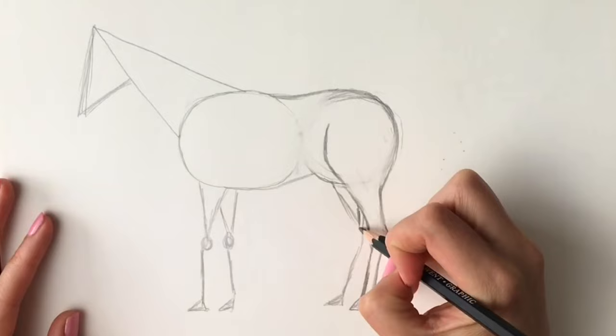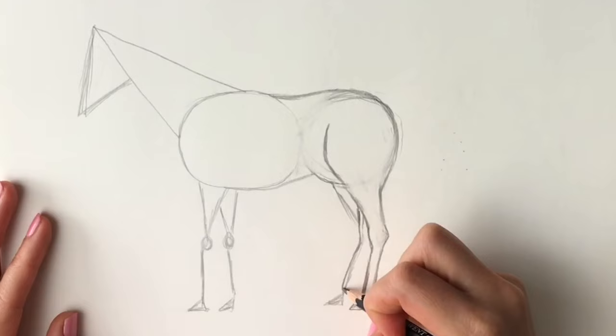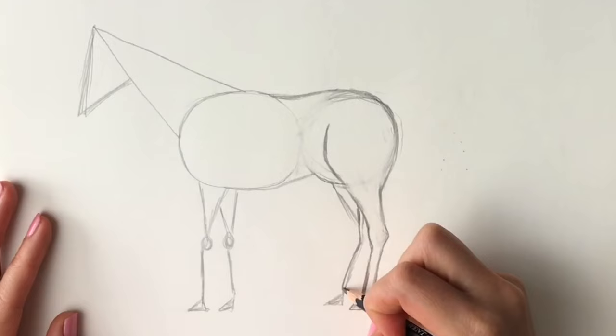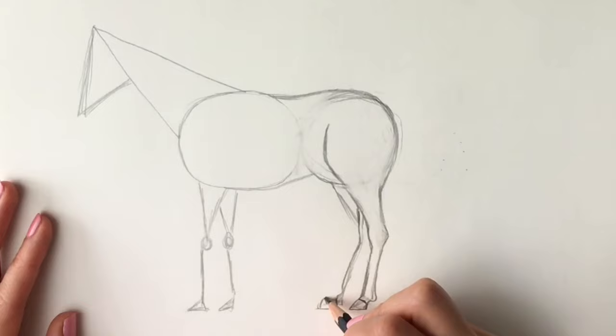All right, so next we're going to be doing the other leg. Again, the hock coming round, the heel and the hoof. There we go.